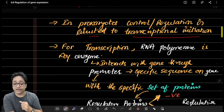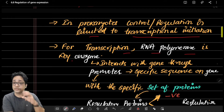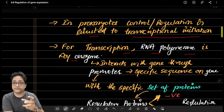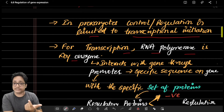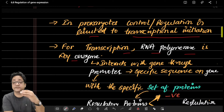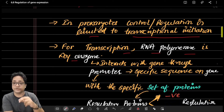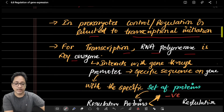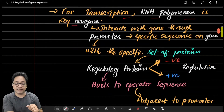For transcription, RNA polymerase is the key enzyme — it adds ribonucleoside triphosphates for polymerization to synthesize RNA. There is only one type of RNA polymerase in all prokaryotes for the synthesis of all RNA. In eukaryotes, there are different types — RNA polymerase I, II, and III — for different types of RNA to be synthesized.